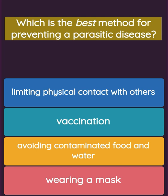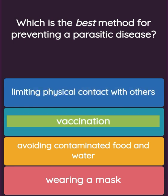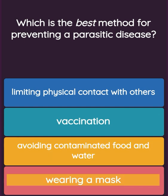Question: Which is the best method for preventing a parasitic disease? Option one: limiting physical contact with others. Option two: vaccination. Option three: avoiding contaminated food and water exposure. Option four: wearing a mask.